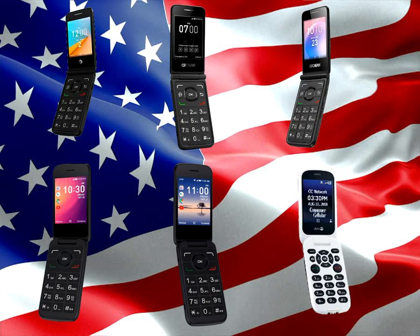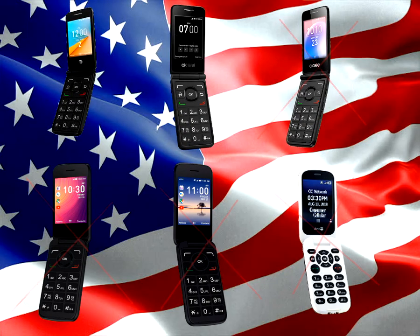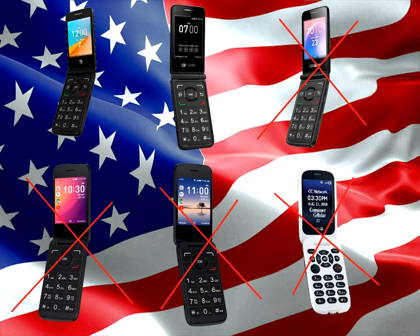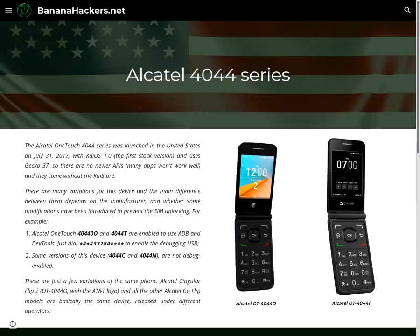All Alcatel phones sold in the United States that support KaiOS are locked, except for some one-touch models of the 4044 series, released in 2017. This series represents the first KaiOS devices in the world, with version 1.0 on board. Being an old version of the software, the latest APIs, including those needed to use WhatsApp, are not supported.